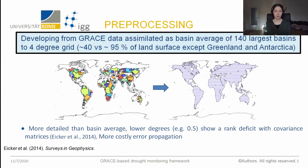Before combining, we need to pre-process our GRACE data. In previous work, we pre-processed GRACE by computing basin averages — for example for one of these 140 basins that you can see here — and this was then assimilated.